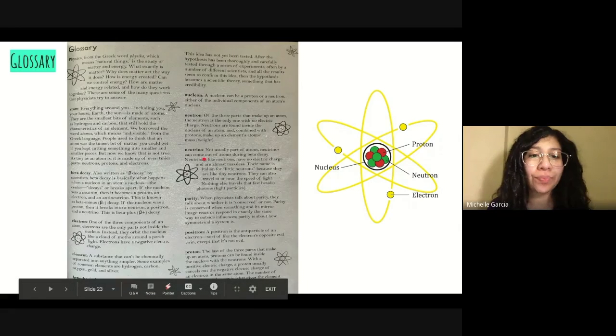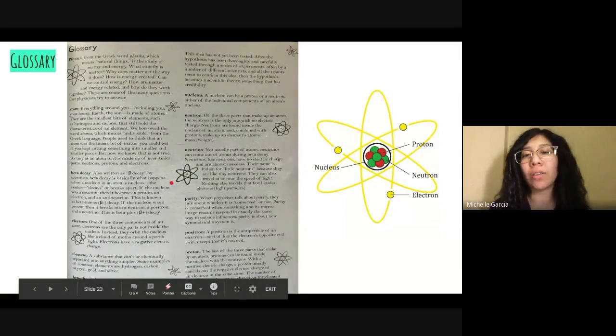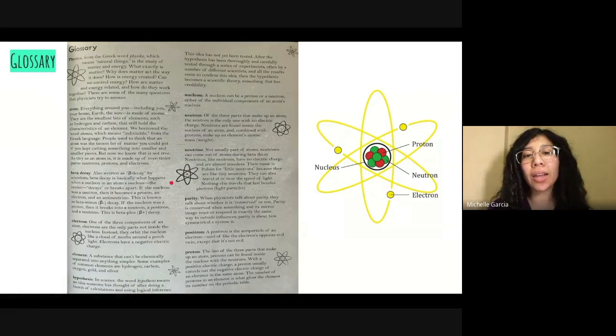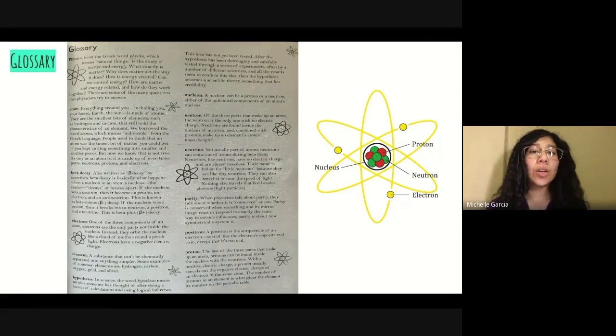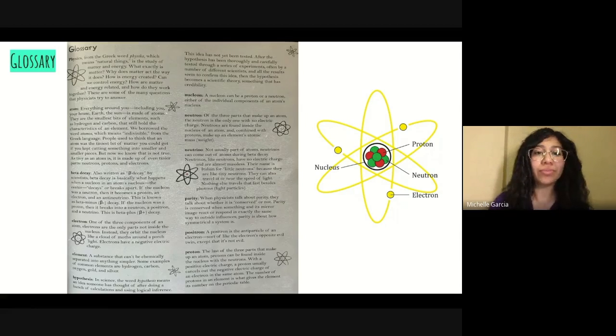Neutrino. Not usually part of atoms, neutrinos can come out of atoms during beta decay. Neutrinos, like neutrons, have no electric charge and are almost massless. Their name is Italian for little neutrons because they are like tiny neutrons. They can also travel at or near the speed of light. Nothing else travels that fast besides photons, also known as light particles.